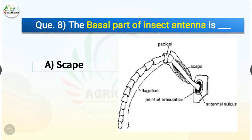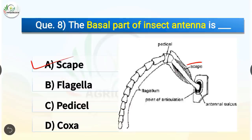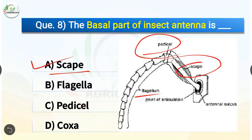Question number 8. The basal part of insect antenna is what? The options are scape, flagella, pedicel, or coxa. The correct answer is option A, scape. The basal part of insect antenna is the scape, whereas the terminal segment of antenna is the flagella, the middle segment is the pedicel, and the basal part of insect leg is the coxa.